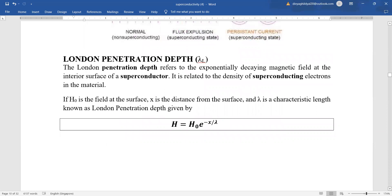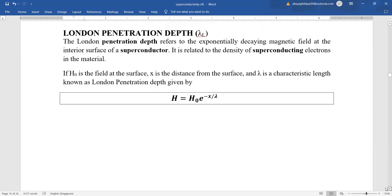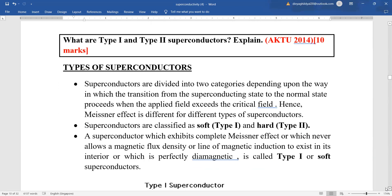Penetration depth refers to the exponentially decaying magnetic field at the interior of a superconductor and it is related to the density of superconducting electrons in the material. Mathematical expression is that if H0 is the field at the surface, X is the distance from the surface and lambda is a characteristic length which is known as London penetration depth, then H is equal to H0 into E to the power of minus X upon lambda. That means exponential decay.